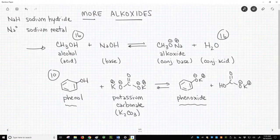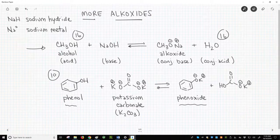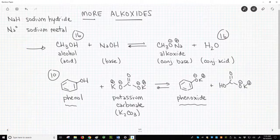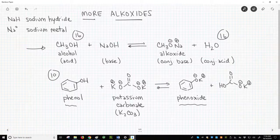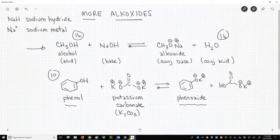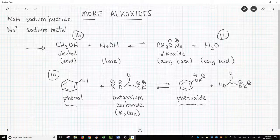A very common base for making phenoxides is sodium or potassium carbonate. Potassium carbonate is K2CO3. We can convert standard alcohols to alkoxides with either sodium hydride or sodium metal. Sodium hydroxide is not effective for making alkoxides. If the OH group is more acidic, the OH group can be deprotonated with even weaker bases, like carbonates.